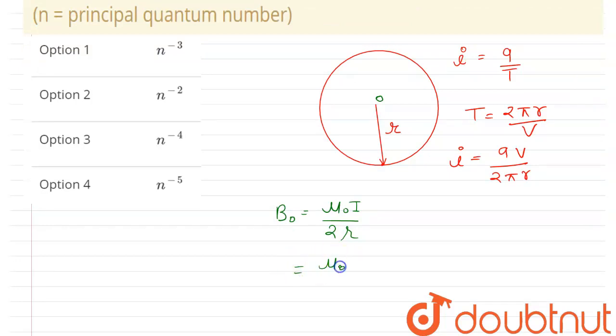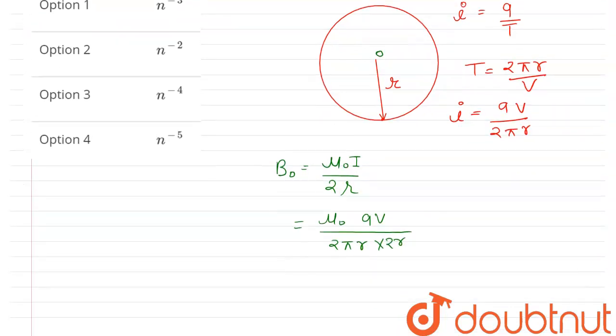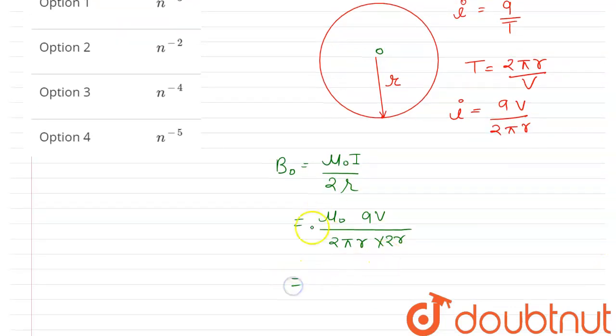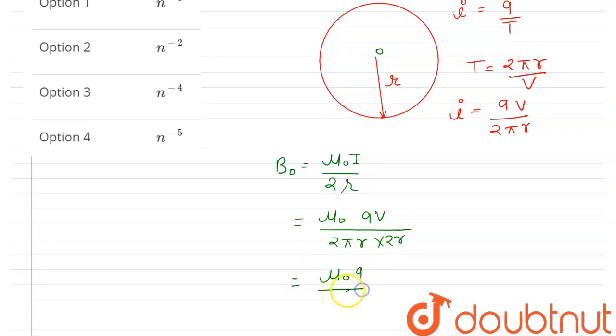So B = μ₀, where μ₀ is permeability of free space, and i is the current. Just put the value of current here, so the current is qv/(2πr), into 1/(2r). This will be the magnetic field. Bring the constant outside, so μ₀q/(4π), all these are constant, so in bracket you will get v/r.